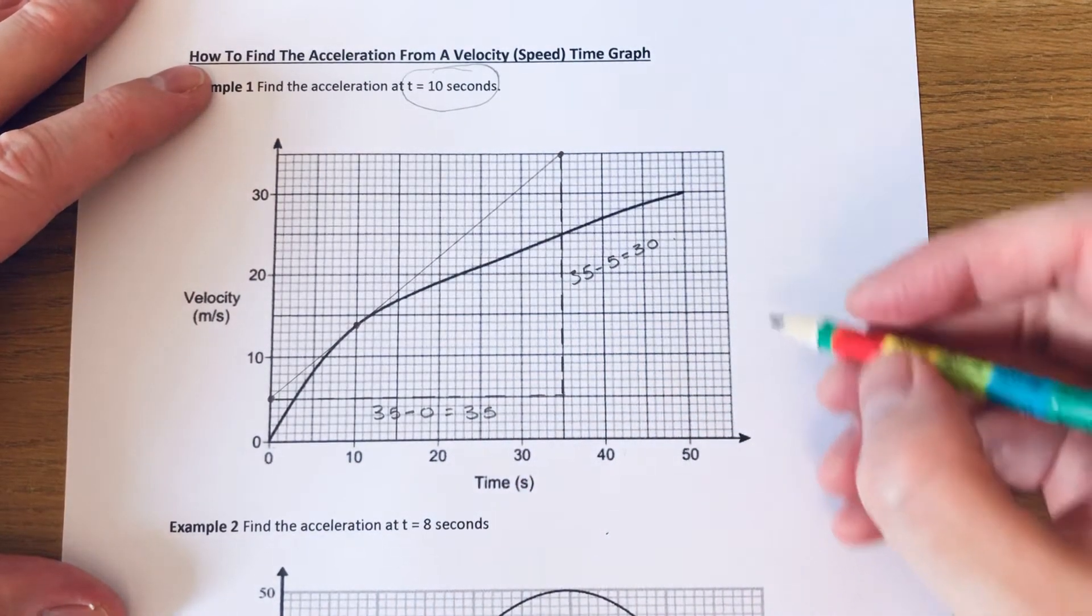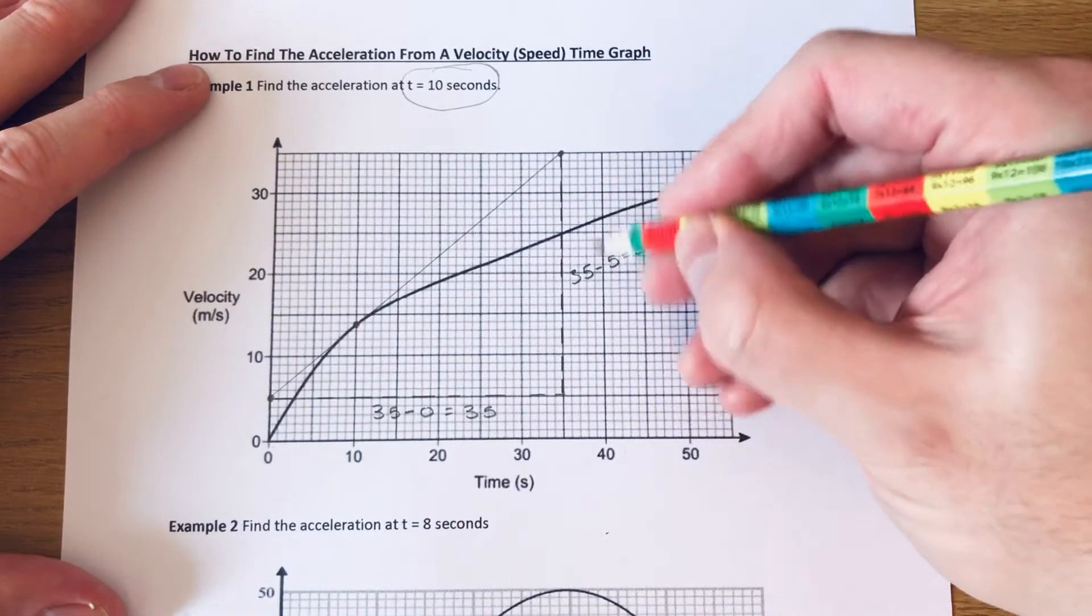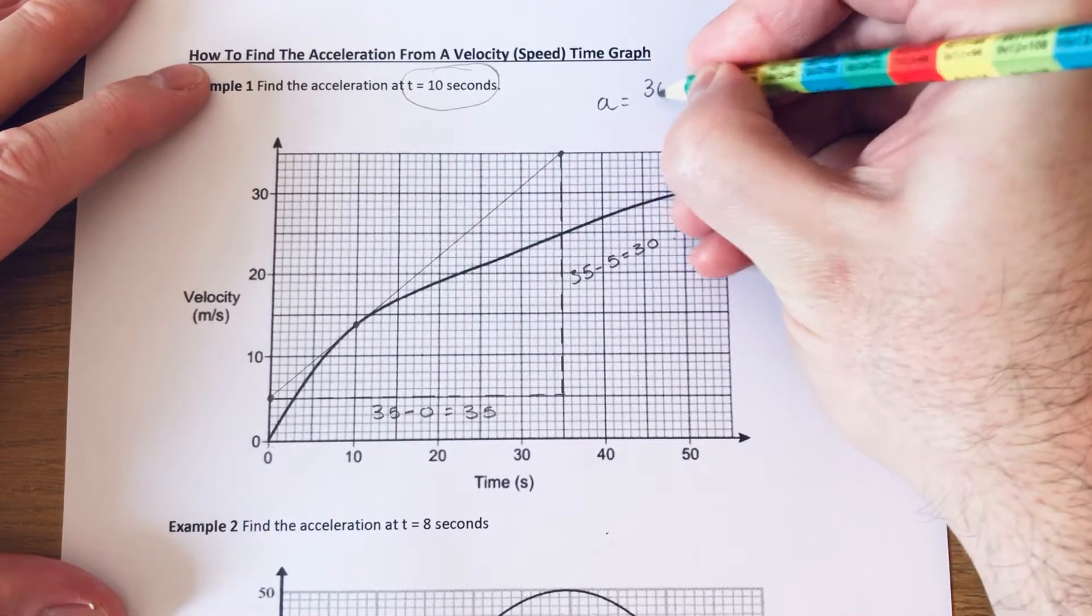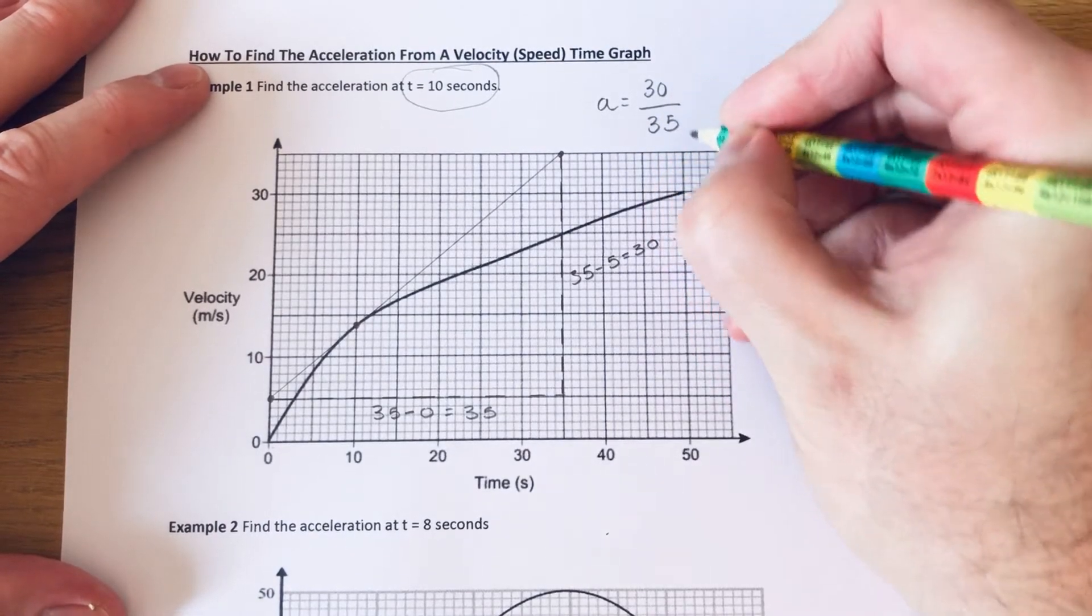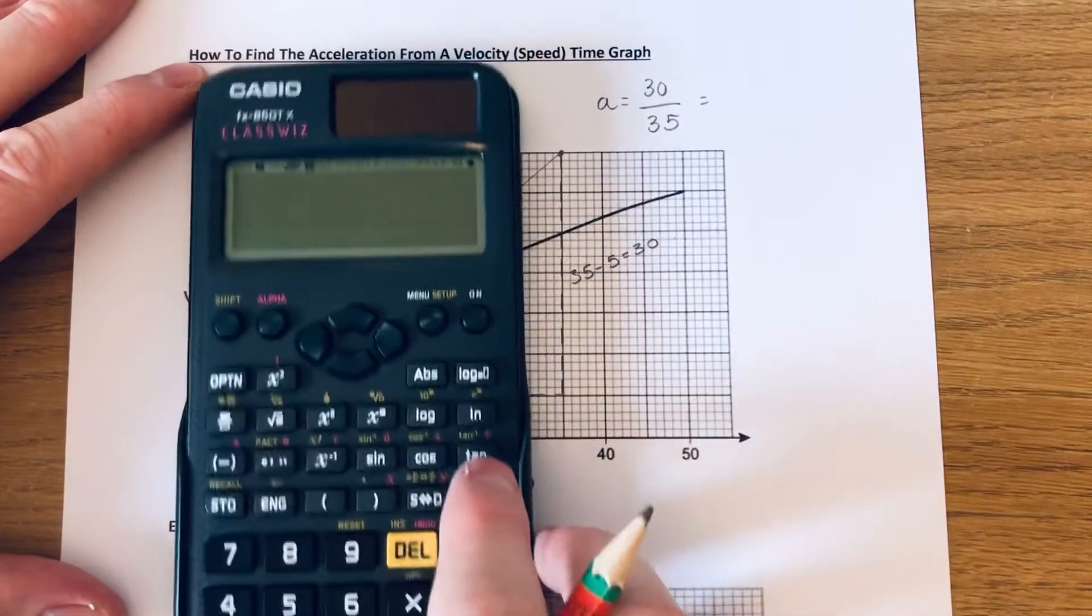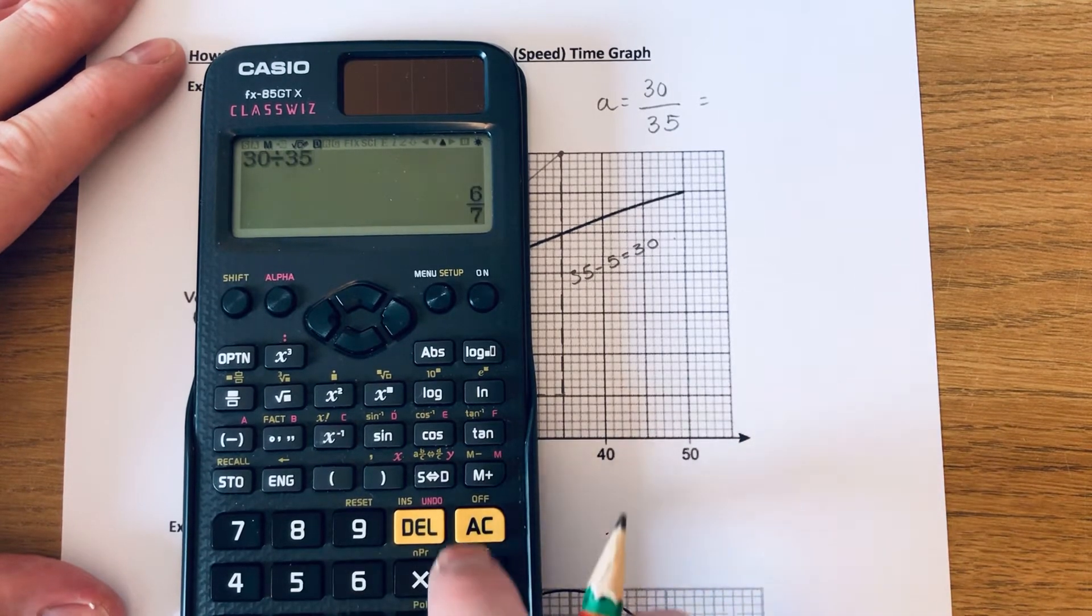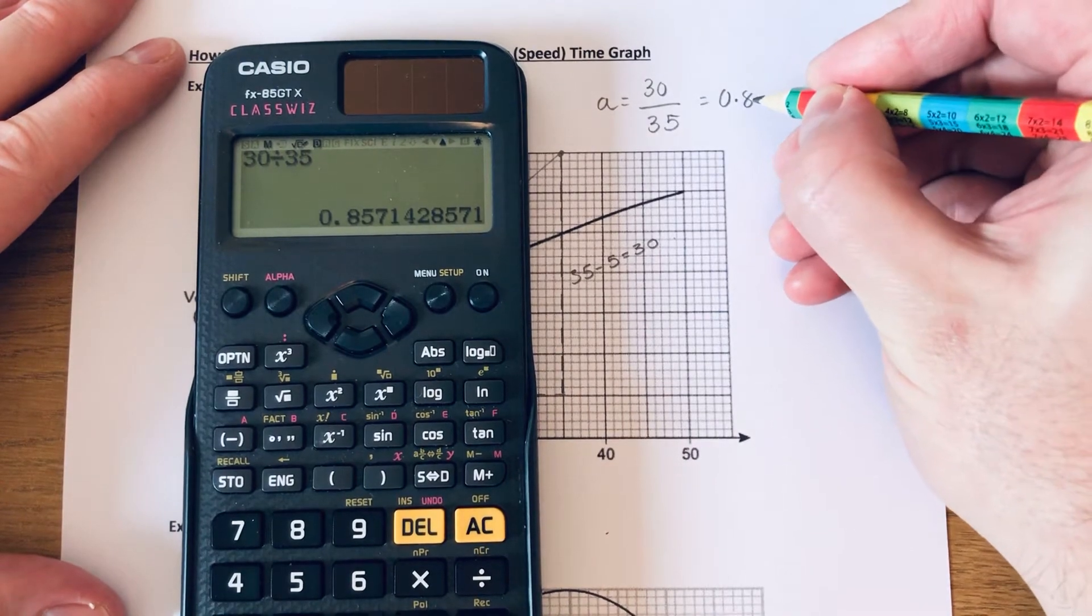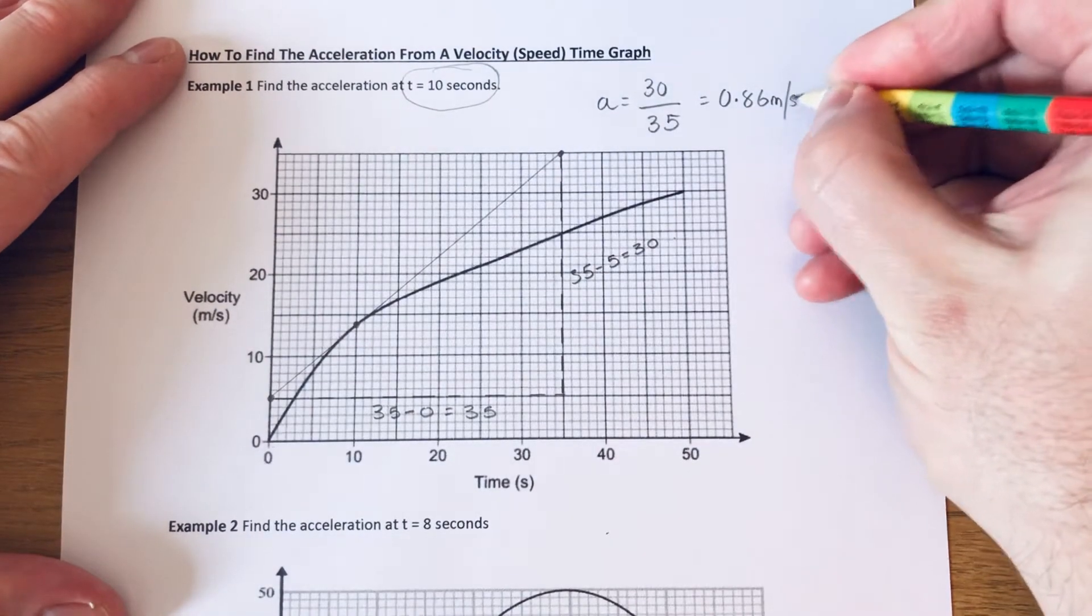So to get our gradient which is the same as the acceleration, we do the height divided by the base. So the height of our triangle is 30 and we divide that by the base which is 35. So I'm going to do this on our calculator. Let's do it to two decimal places. So 30 divided by 35. So we get 0.86 and it will be meters per second squared.